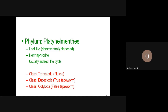The body is really flattened — we may also call them leaf-like. Most platyhelminthes, except some like Schistosoma, are hermaphroditic, meaning there is no separate male or female. Each individual contains both reproductive organs.